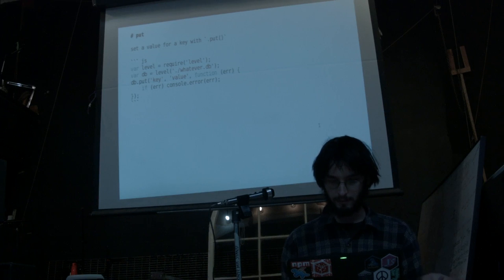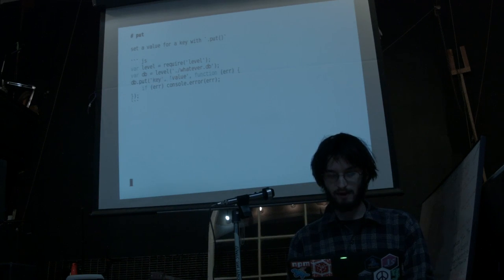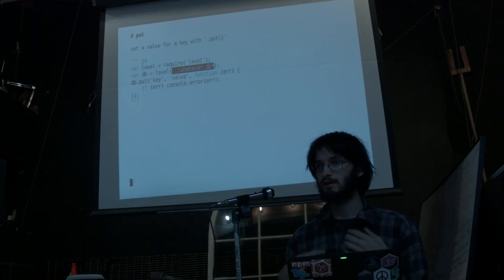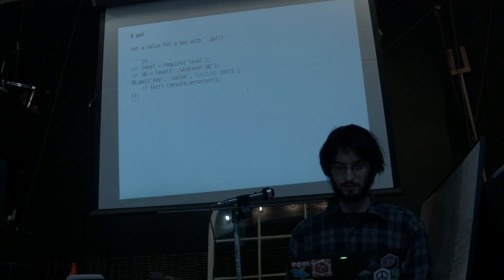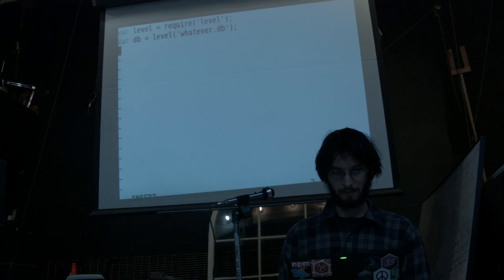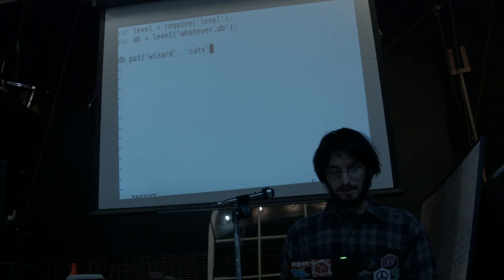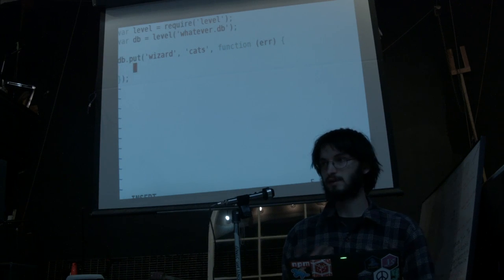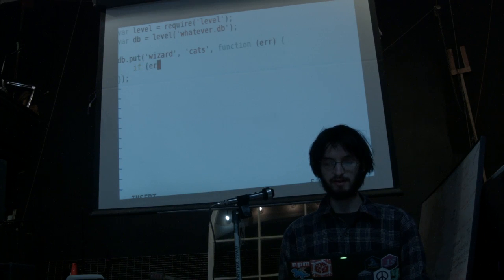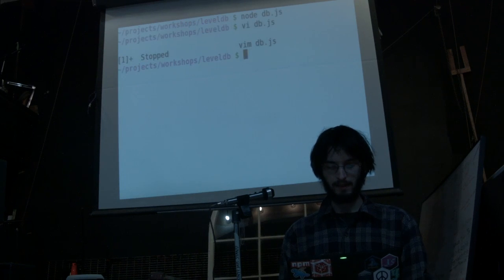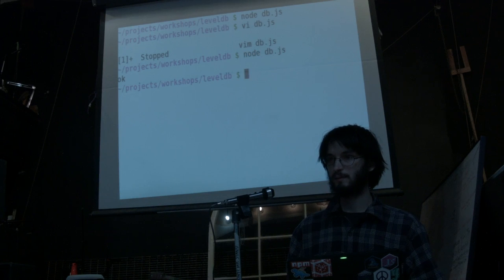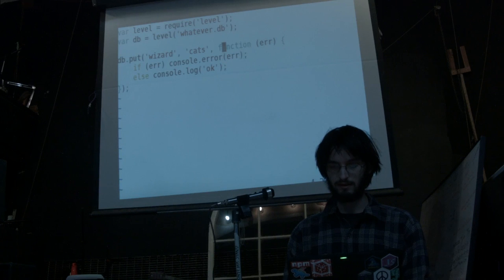Now let's actually do something with our database. One of the first things we can do is db.put. Put takes a key and a value. If you don't pass any encodings, that value should be a string — if you want to store an object, you would have to do JSON.stringify. Let's do something very simple: db.put, key 'wizard', value 'cats'. That takes an optional callback that will give you an error if there was an error inserting into the database. Otherwise we'll print 'okay'. If I run db.js, it prints okay. Now we've got a key called wizard and the value should be cats.